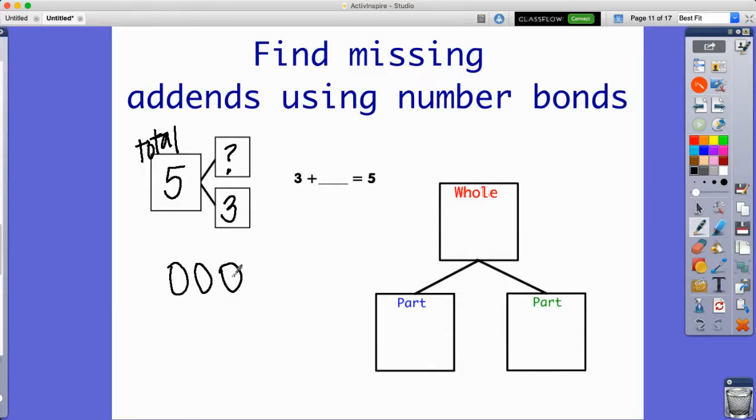Pretend these are little counter chips or whatever. I only need to get to 5 of these. So I know this is 1, 2, 3. I'm going to draw one more and that's going to be 4, and then another one would be 5. So right here, this is how many I'm going to add to it.